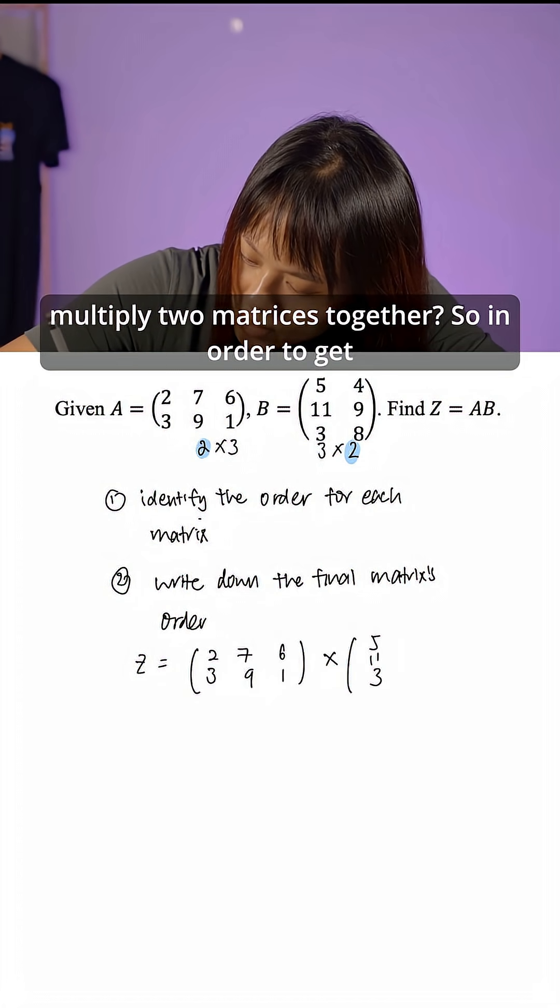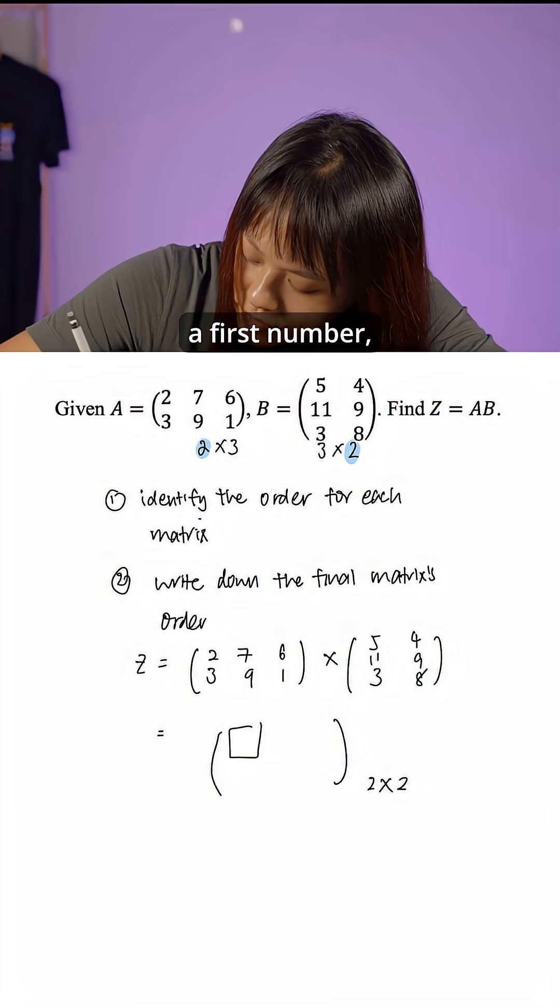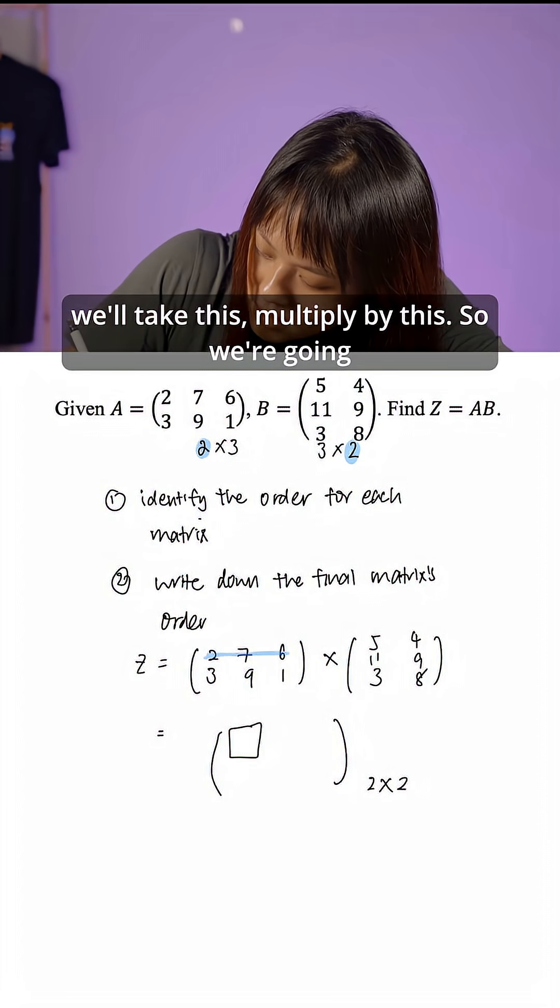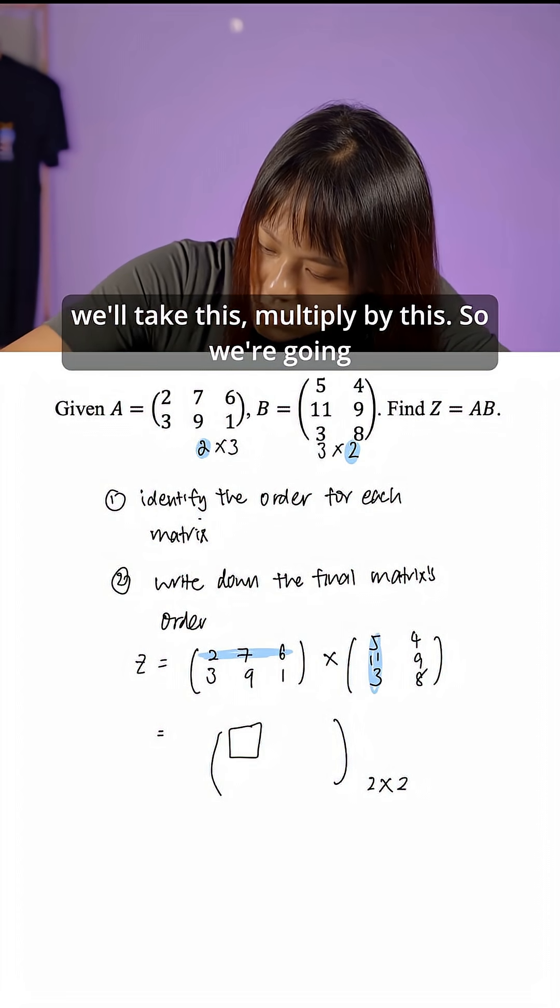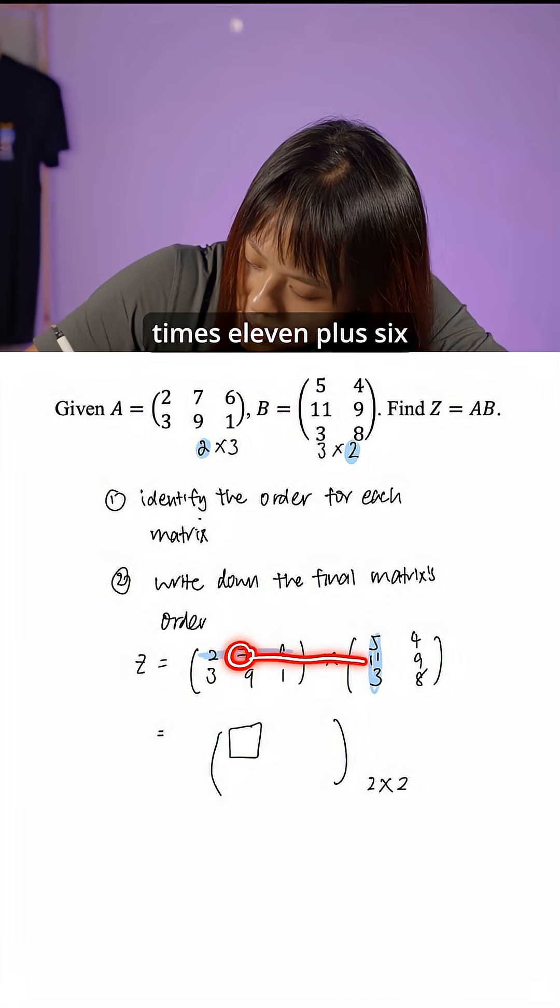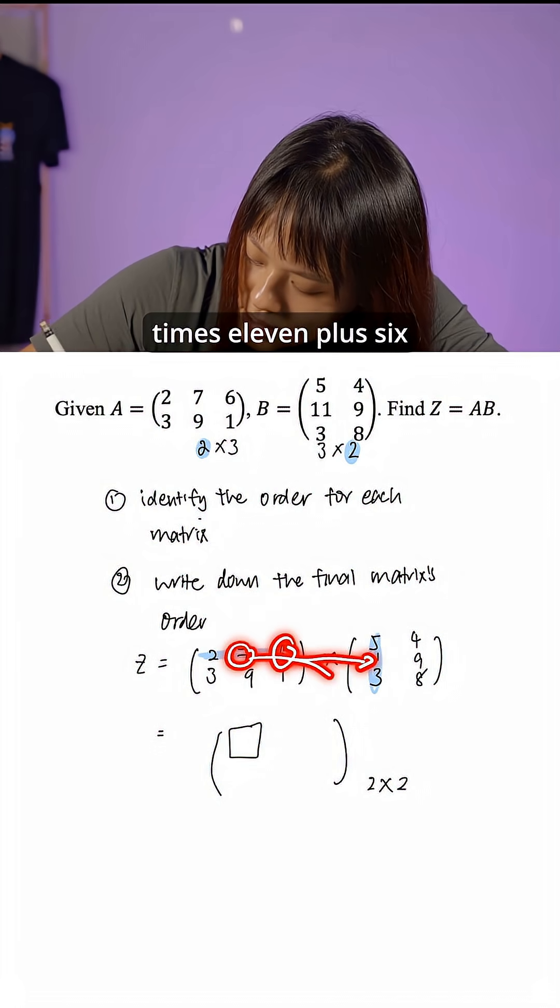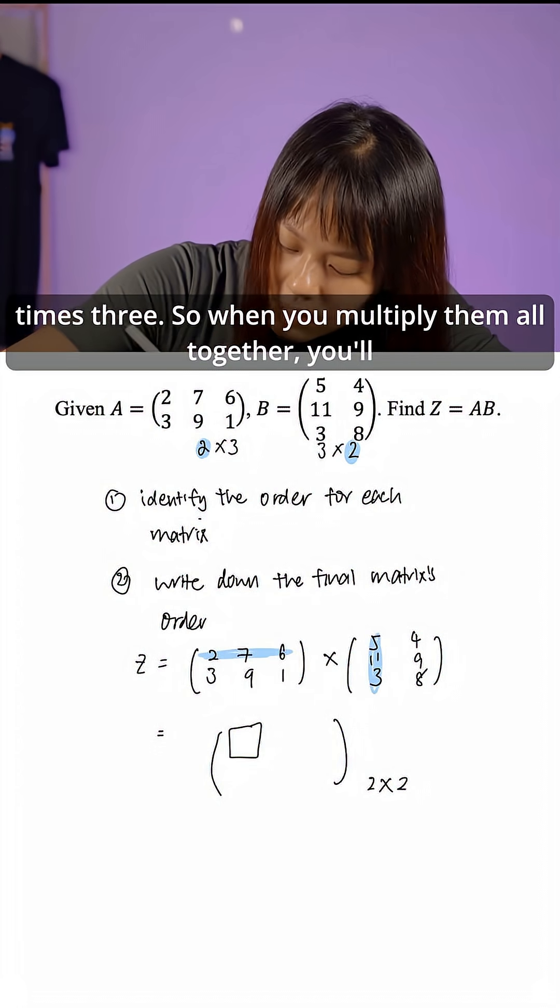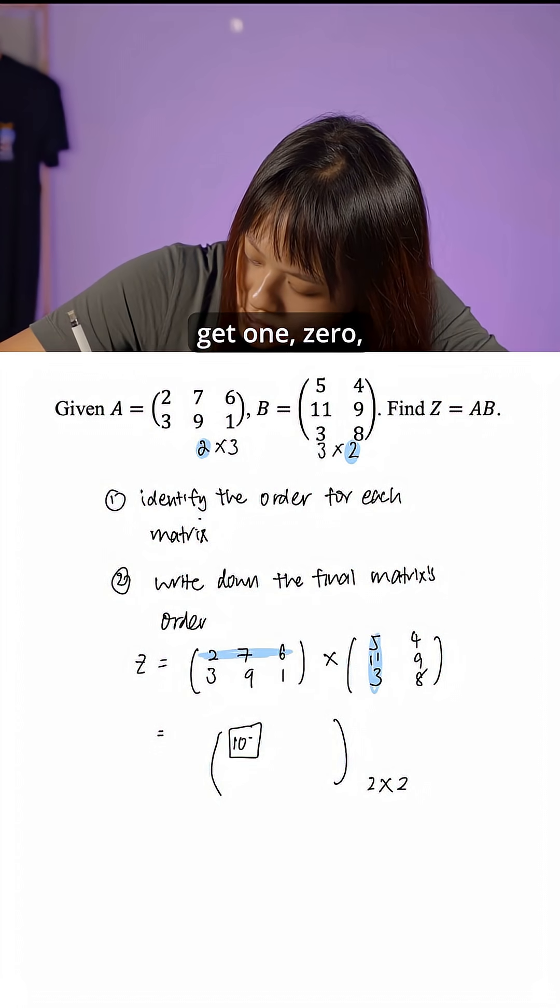So now how do we multiply two matrices together? In order to get the first number, we'll take this multiply by this. So we're going to take 2 times 5 plus 7 times 11 plus 6 times 3. When multiplying them all together you'll get 105.